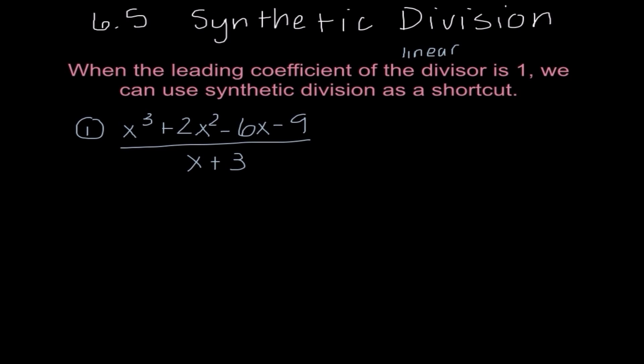When we set up synthetic division, it is very similar to how we set up synthetic substitution. I'm looking at what I'm dividing, and I am first going to fill in any missing terms with zeros. I also need to make sure that it is in descending order. So in this case it is, so my coefficients are 1, 2, negative 6, and negative 9.